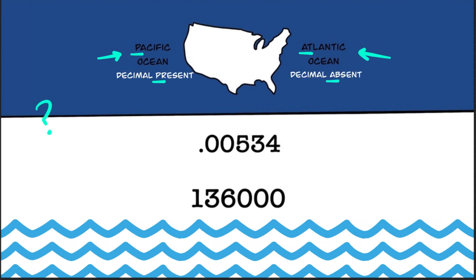So if we're looking at this first number, a decimal is present, which means we're going to start on the Pacific side — which is the left — and work from left to right until we hit our first non-zero digit. Any digits after and including this digit are significant. So there are three significant digits in this number: 5, 3, and 4.